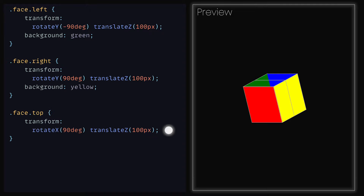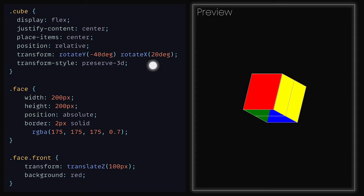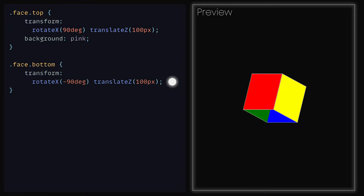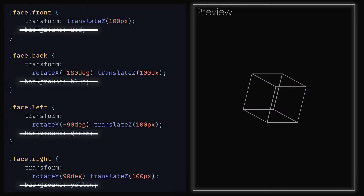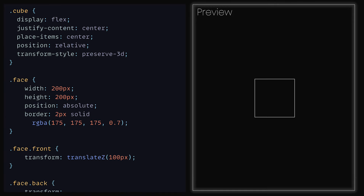Then for the top face, we can rotate that by 90 degrees on the X axis and translate it on the Z axis by 100 pixels with a background color of pink. We just need to add in the bottom face. We can go back up to the cube class and set rotateX to be positive 20 degrees. Then back down, we can add in the classes that have both face and bottom to have a transformation of rotate on the X by negative 90 degrees and translateZ to have 100 pixels and give it a background color of orange. Now that we have it set up, we can get rid of our helper colors and remove the transform from our cube class so that our cube is facing us directly.